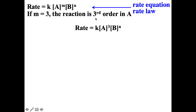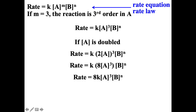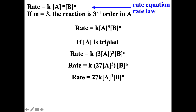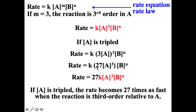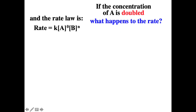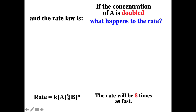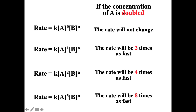If M equals three, it's third order with respect to A. If we double the concentration, two gets cubed — two times two is four, times two is eight — so the new rate is eight times as fast. If we triple the concentration and it's third order, three gets cubed: three times three is nine, times three is 27, so the rate is 27 times as fast. Summary: doubling the concentration gives no rate change (zero order), doubles the rate (first order), four times the rate (second order), or eight times the rate (third order).